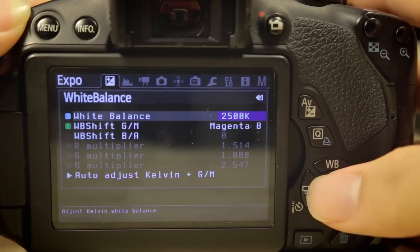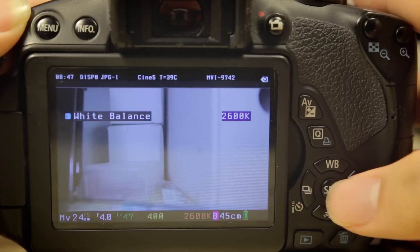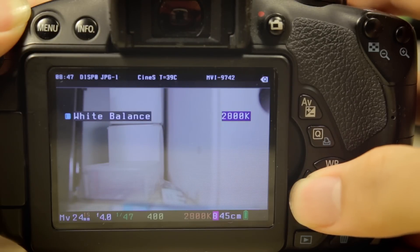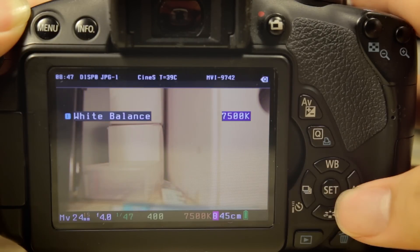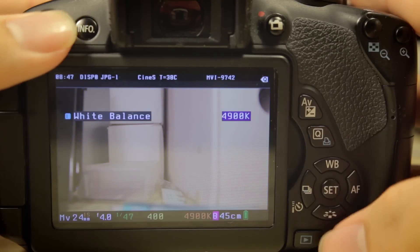You can dial in a Custom White Balance Kelvin value and change the white balance accordingly, which is really great. And now there's no need to take a picture of a blank surface and use that as a reference for the Custom White Balance function, having to go all the way into the menu, setting your Custom White Balance based on that picture, then setting your white balance back to Custom White Balance, and having to redo that every single time.